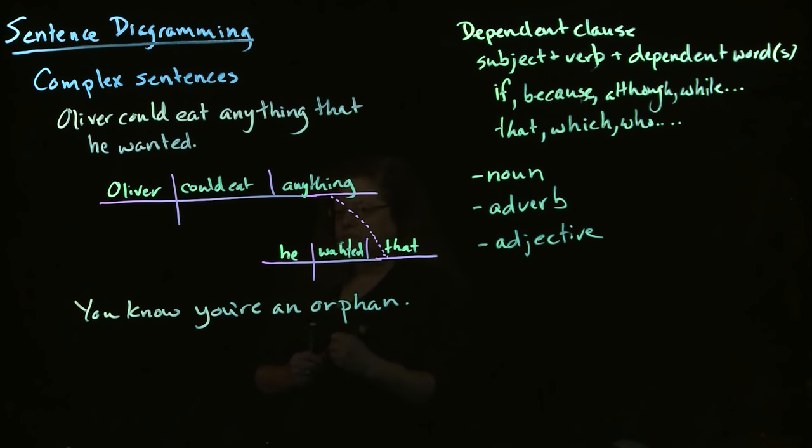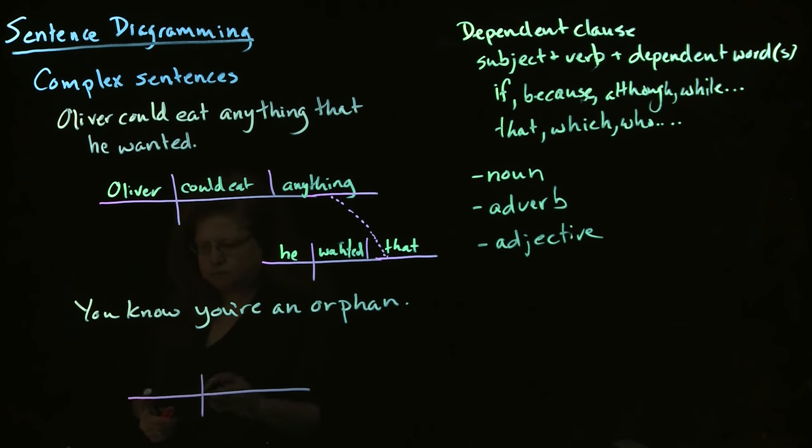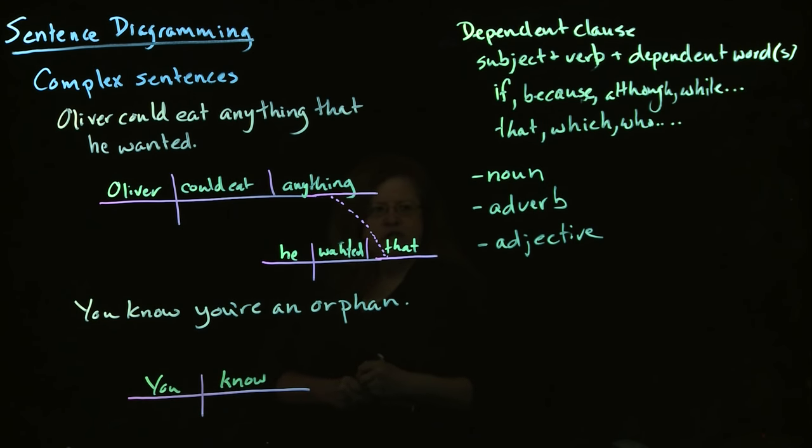So, in this case, we have our subject, you. Our verb, know. And in this case, we have our dependent clause is actually acting as a noun. It's the direct object of the sentence.